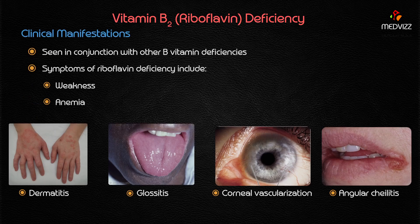The clinical manifestations of riboflavin deficiency usually occur in conjunction with other vitamin B deficiencies; isolated vitamin B2 deficiency alone is rare nowadays. Symptoms of riboflavin deficiency mainly include dermatitis and glossitis, though these are seen in only approximately 50 to 70 percent of cases.